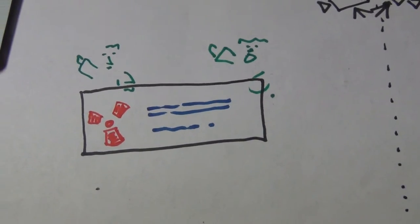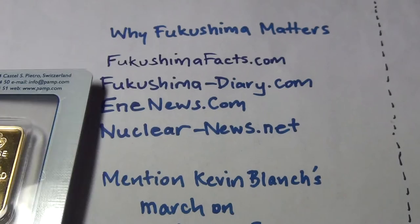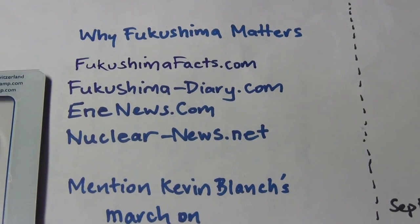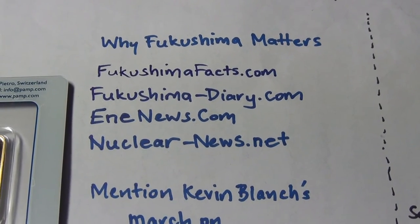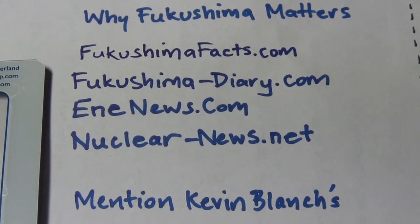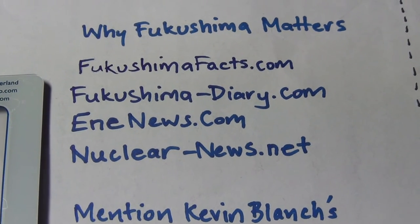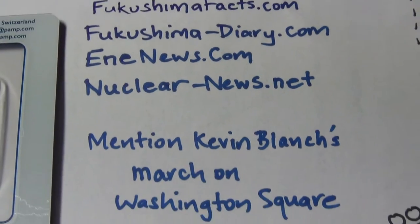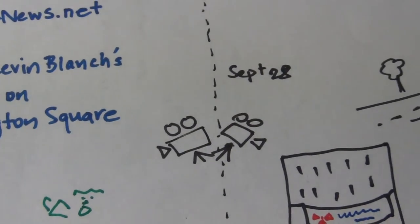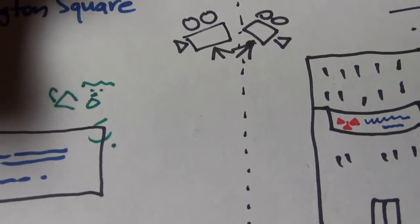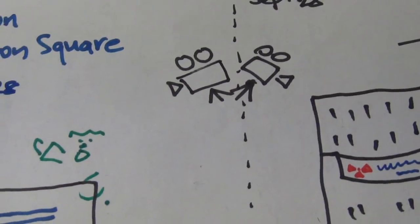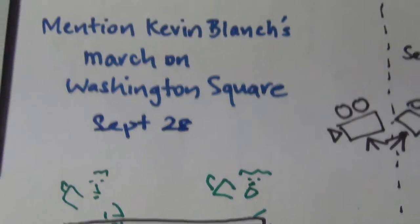Now the protest must hand out flyers mentioning these sites. This is just a short spiel about why you think Fukushima matters. The flyers don't have to be any particular size, but they do have to mention these websites: FukushimaFacts.com, Fukushima Diary, any news, nuclearnews.net, and it must also mention Kevin Blanche's march on Washington Square, which is September 28th.